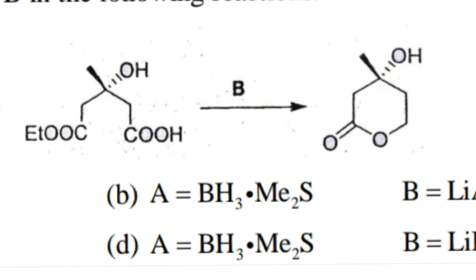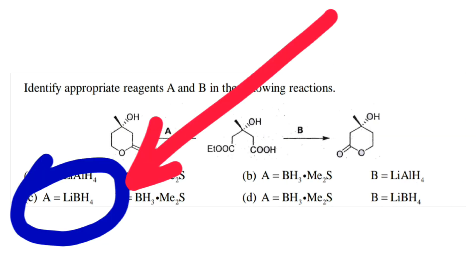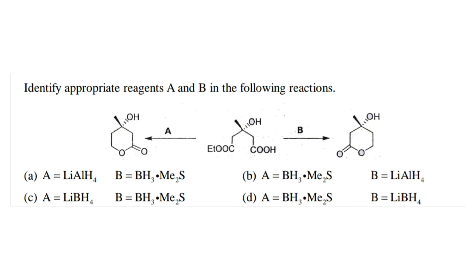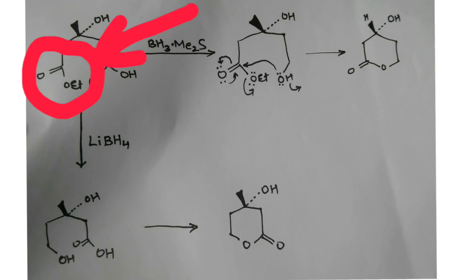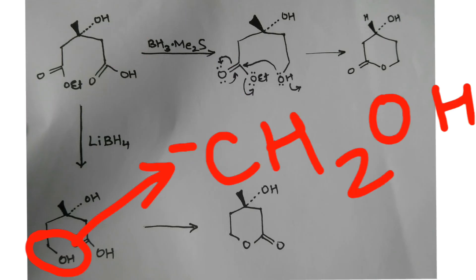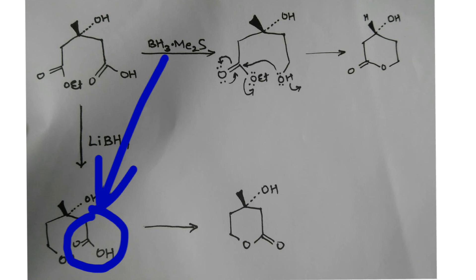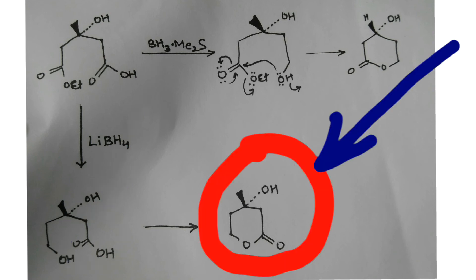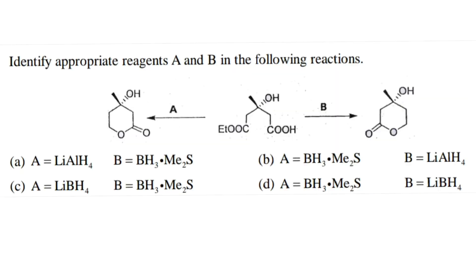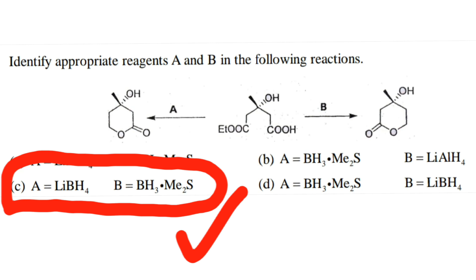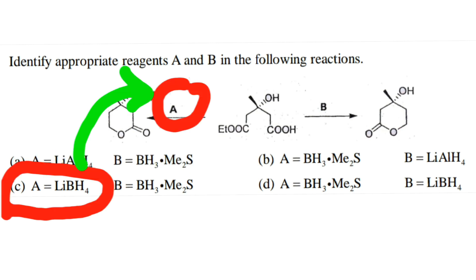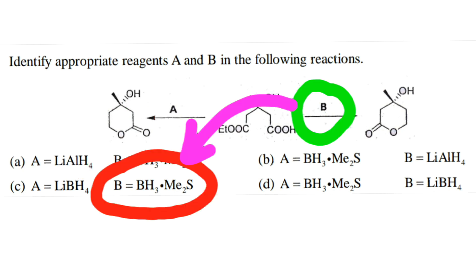The next reagent is LiBH4. It selectively reduces ester groups to primary alcohol. The ester group is here, it will get reduced to alcohol and it will react with the carboxylic acid to give this lactone ring. So option three becomes the right choice because reagent A is LiBH4 and reagent B is this reagent (BH3·Me2S).